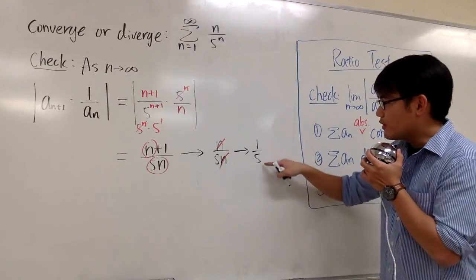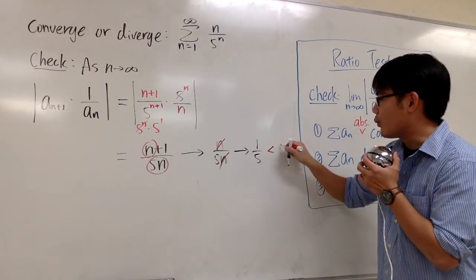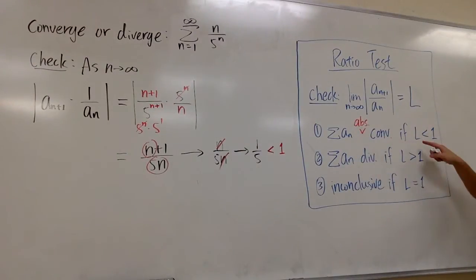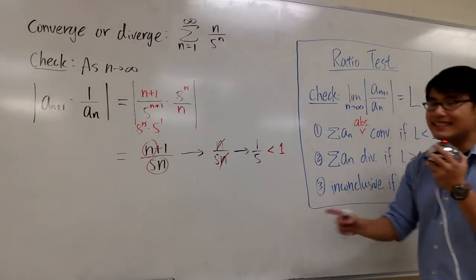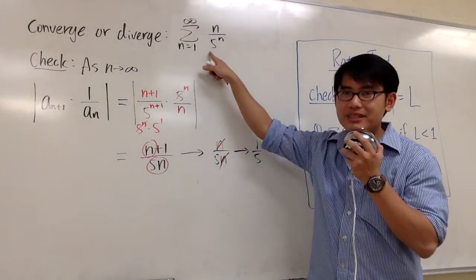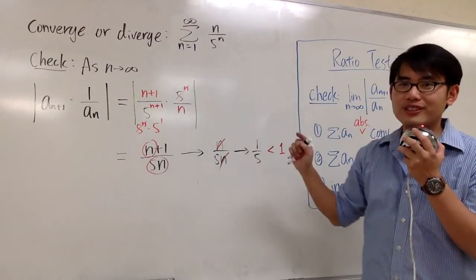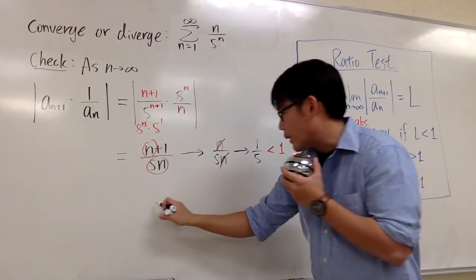More importantly, 1 over phi, we know that this is less than 1. So we're talking about the first situation. When the L is less than 1, we know that the original series converges. Absolutely. But we can just say this converges.